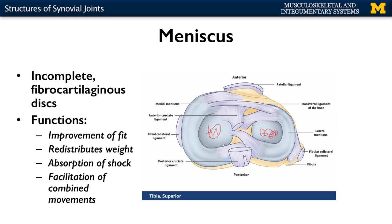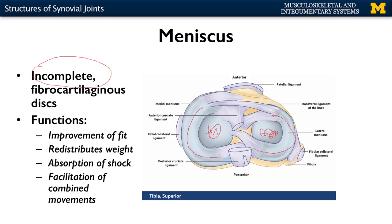So you have these additional fibrocartilaginous discs, which are different from the articular discs we just discussed because they are incomplete — they're not forming a complete circle, so they're generally almost crescent-shaped. What they do is kind of extend that area and allow for a better fit between the two bones — improvement of fit. They also redistribute weight and play a role in facilitation of combined movements. You'll see these a lot in hinge joints, though many hinge joints aren't true hinge joints — you can have a little movement to the lateral and medial sides as well.